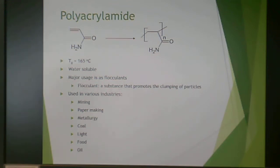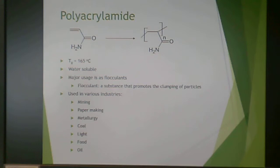Polyacrylamide also has a very high Tg — even higher — at 165°C. The big thing about polyacrylamide is that it is water soluble, and that finds its major use as a flocculant. A flocculant is a substance that promotes clumping of particles. So this is used in water and wastewater remediation, also mining, papermaking, metallurgy, and the coal, food, and oil industries as well.